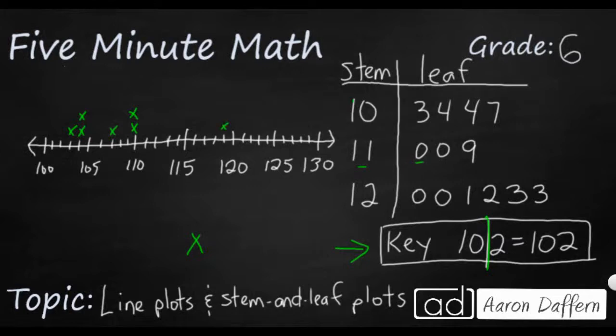And then finally, we've got a lot of 120s. We've got 120, 121, 122, and then two 123s. And that's all we're going to do with our stem and leaf plots and our line plots, sharing information from one with the other.